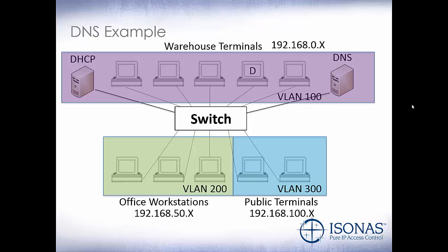Let's take a look at a DNS example. We have a DNS server — it could be running on the DHCP server, the default gateway, or a public one like Google's 8.8.8.8. PC D wants to go to isonus.com, but doesn't know the IP address. It sends the request to the switch, which forwards it to the DNS server. If the DNS server already has the record, it sends the IP address back through the switch to PC D. The computer caches that IP address so whenever it needs to visit the site again, it already has it logged until the next reboot.